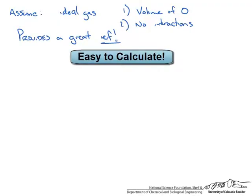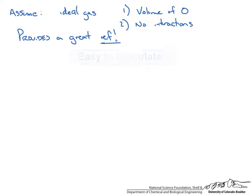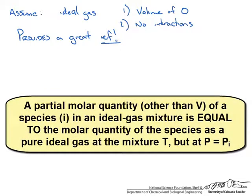Summary so far: a partial molar quantity, other than volume, of a species in an ideal gas mixture equals the molar property of the species as a pure ideal gas at the same mixture temperature but at a pressure equal to the partial pressure in the mixture. This works with other partial molar properties as long as they are evaluated at the partial pressure.